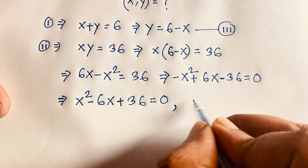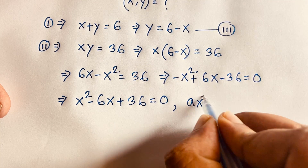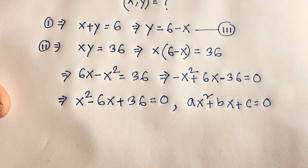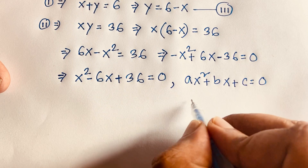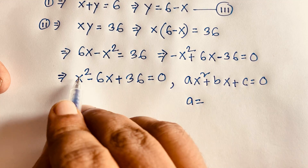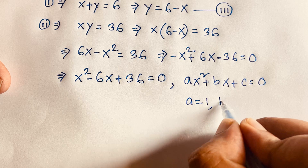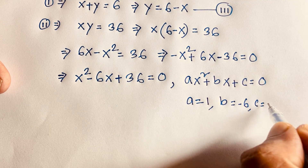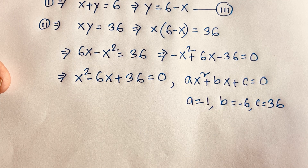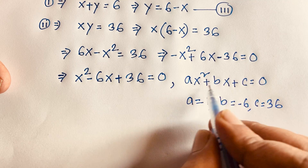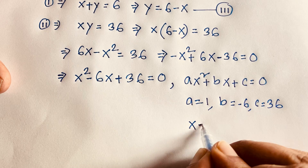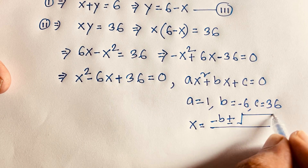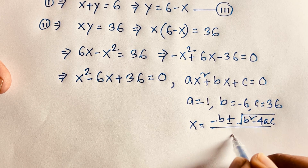If I compare this equation with the standard form ax squared plus bx plus c equals 0, I can see easily that a is equal to 1, b is equal to minus 6, and c is equal to 36. We know that x equals minus b plus or minus square root of (b squared minus 4ac) over 2a.